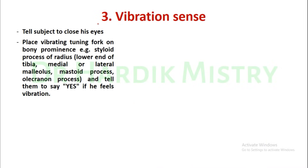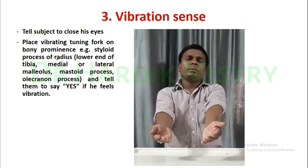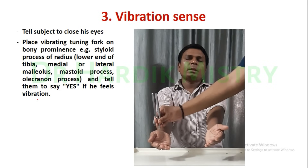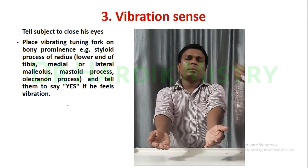Now the third part is vibration sense. Tell the subject to close his eyes. Place a vibrating tuning fork on a bony prominence, for example the styloid process of the radius. Other bony prominences include the lower end of the tibia, medial or lateral malleolus, mastoid process, and olecranon process. Tell the subject to say yes if he feels the vibrations.